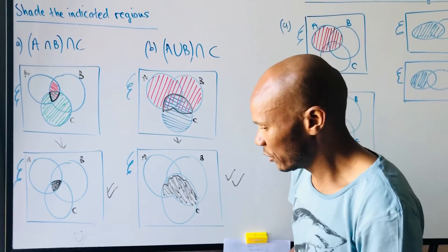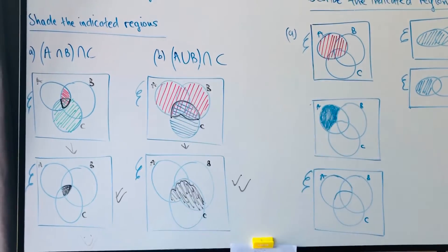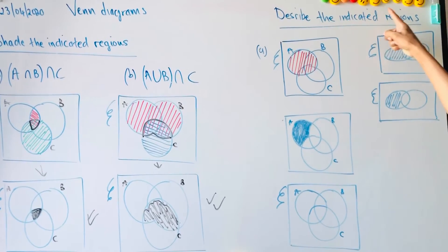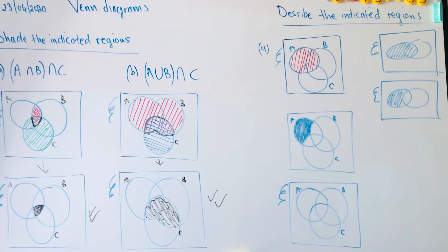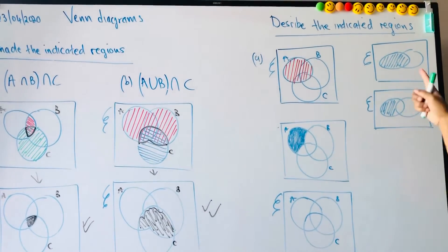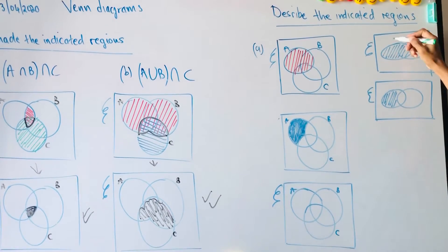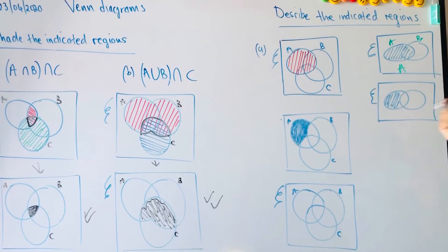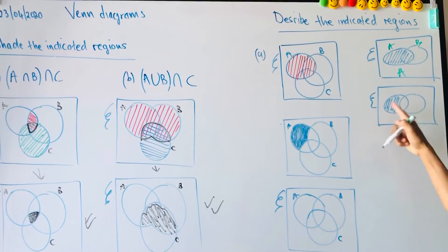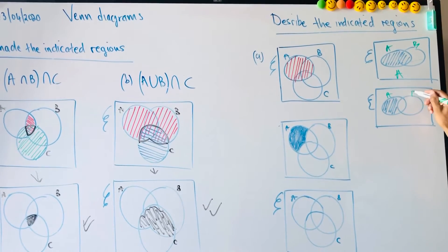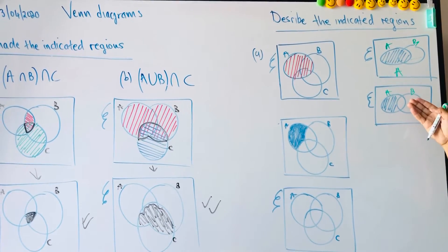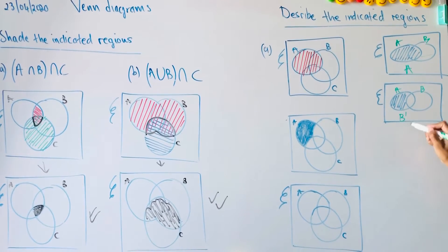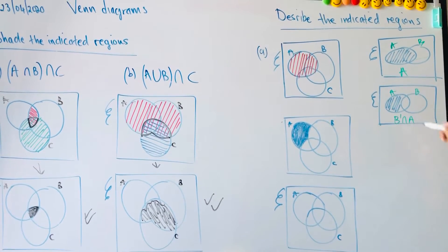Now let's describe the indicated regions. Starting with two sets: if this is A and that's B, this shaded one is just A. But this other one — I shaded A, but it's the part of A that is outside of B, so it's A intersecting with the complement of B.